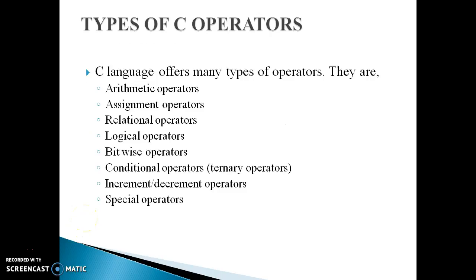There are different types of operators. C language offers many types of operators: arithmetic operator, assignment operator, relational operator, logical operator, bitwise operator, conditional operator, increment or decrement operator, and special operator.